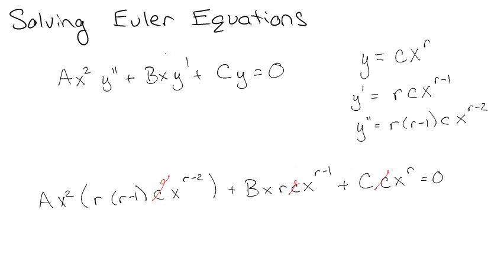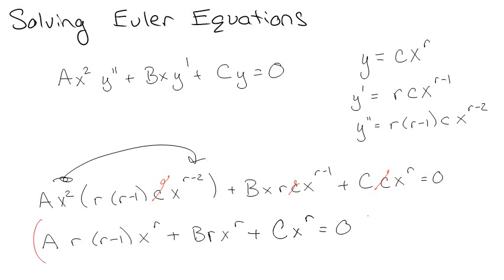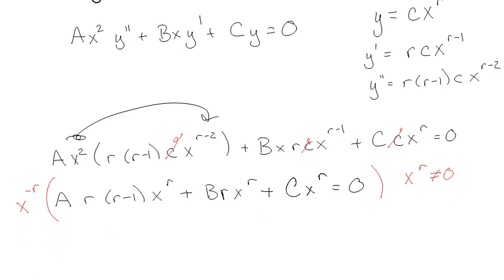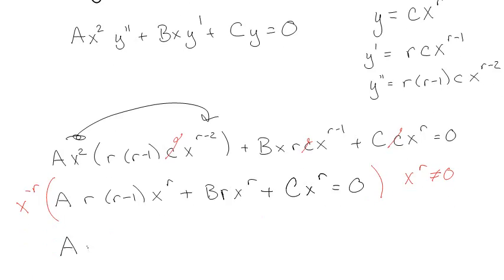Now if I distribute that x squared, the 2 from the x squared combines with the r minus 2 to give me x to the r. The same thing happens again. I get brx to the r plus cx to the r. Now if I assume that x to the r is not equal to 0, then I can multiply the whole thing times x to the negative r. And what's fantastic is that now I have Ar(r-1) plus Br plus C equals 0, which is basically like a characteristic equation for Euler.